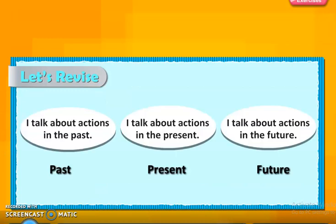Let's revise. When we talk about actions in the past, we use past tense. When we talk about actions in the present — what is happening now — we use present tense. When we talk about actions in the future — something that hasn't happened yet but will happen — we use future tense.